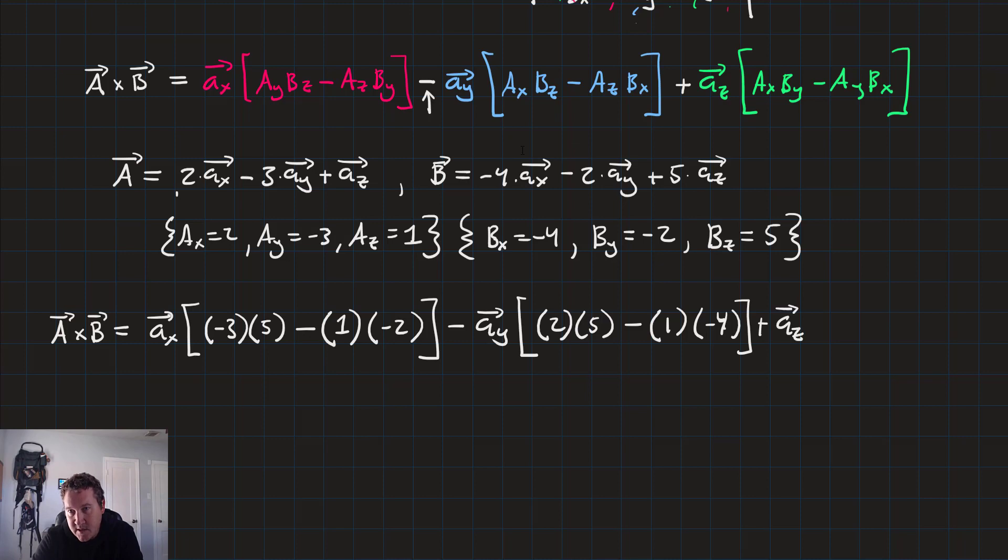Plus the unit vector a sub z times a sub x times b sub y. So 2 times negative 2 minus a sub y times b sub x negative 3 times negative 4.